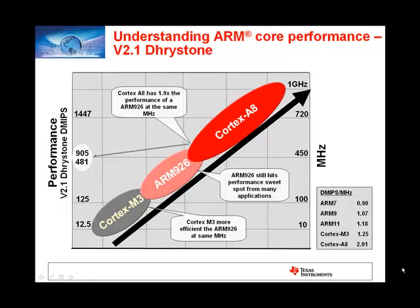Dhrystone is a short synthetic benchmark created through simple programs carefully designed to statistically mimic some common set of programs. These programs are intended to be representative of system integer programming. The Dhrystone benchmark contains no floating-point operations. Dhrystones per second is the metric used to measure the number of times the program can run in a second. Dhrystone tries to represent results more meaningfully than MIPS, because MIPS cannot be used across different instruction sets — for example, RISC versus CISC — for the same computation requirement. Thus, the main score is supposed to be more reflective of true performance.